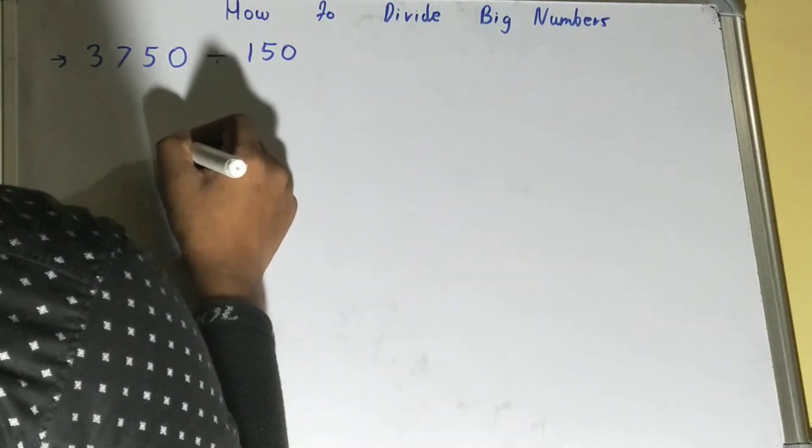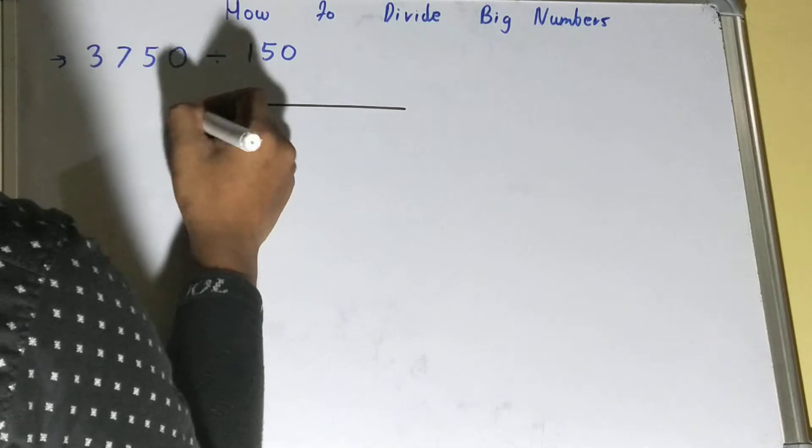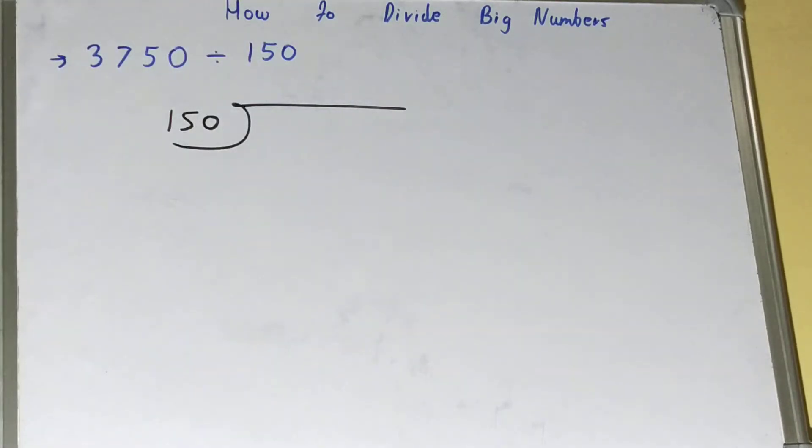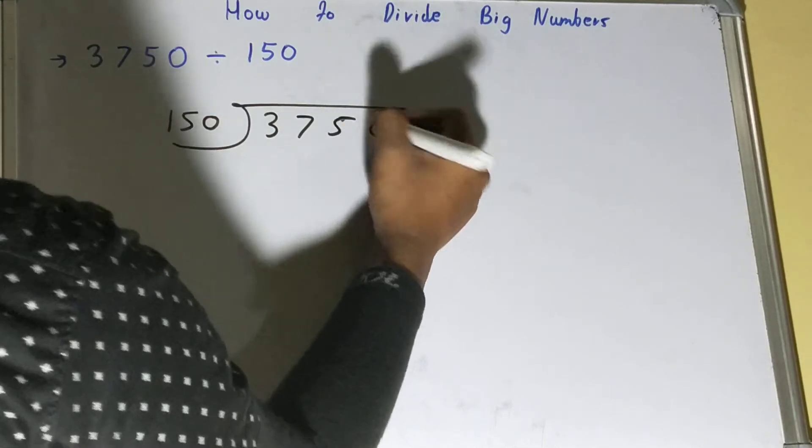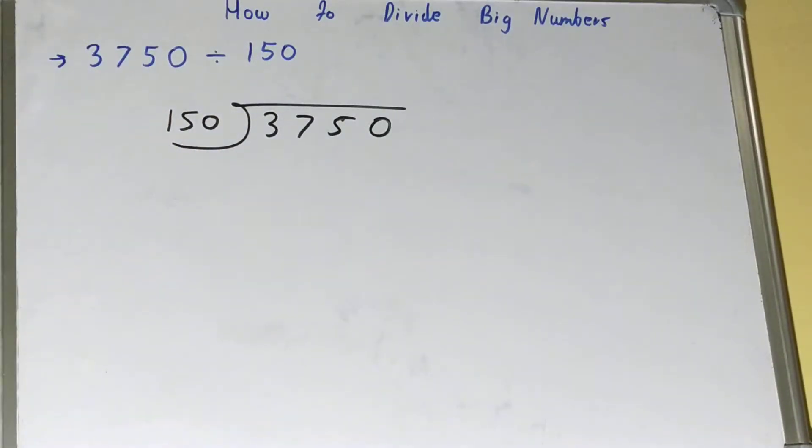First of all, let's write it in a division form like this. So 150 outside - that is basically the divisor - and the number that needs to be divided inside, that is 3750.